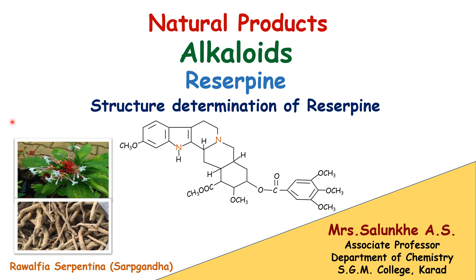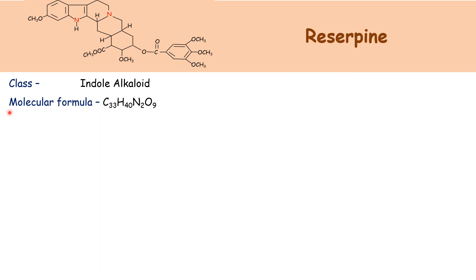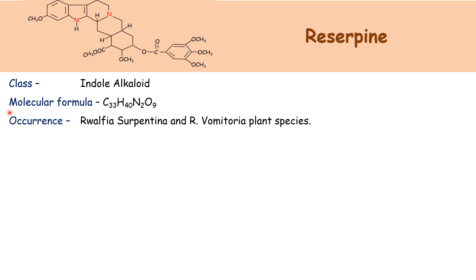Welcome students. In this video we are going to study another alkaloid, that is reserpine. Reserpine occurs in the plant Rauwolfia serpentina, that is serpagandha. Its class is indole alkaloid. Its molecular formula is C33H40N2O9. Reserpine also occurs in Rauwolfia serpentina and R. homitroria plant species.